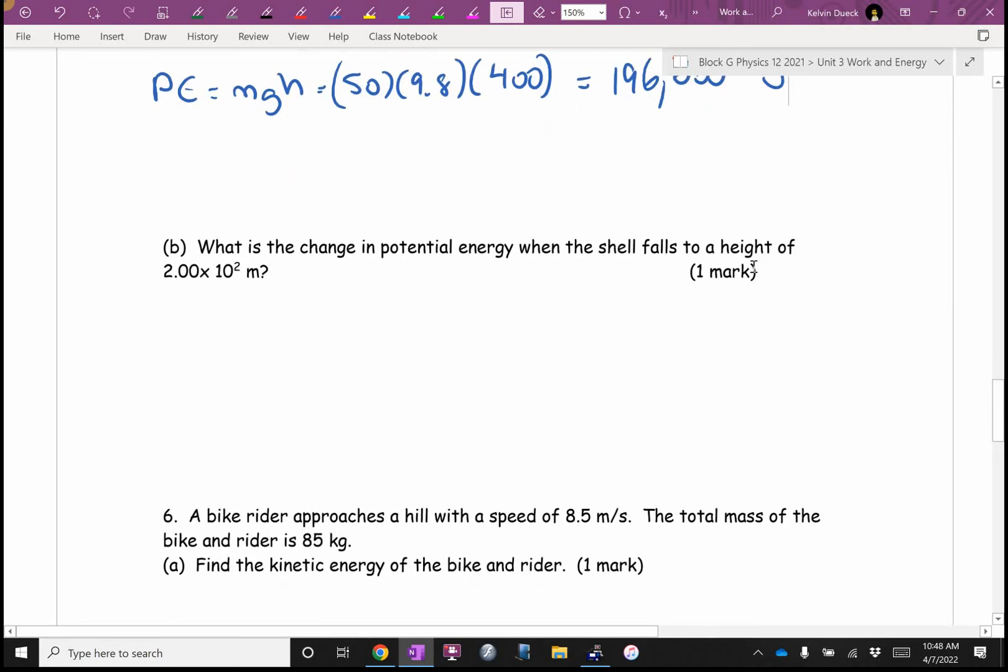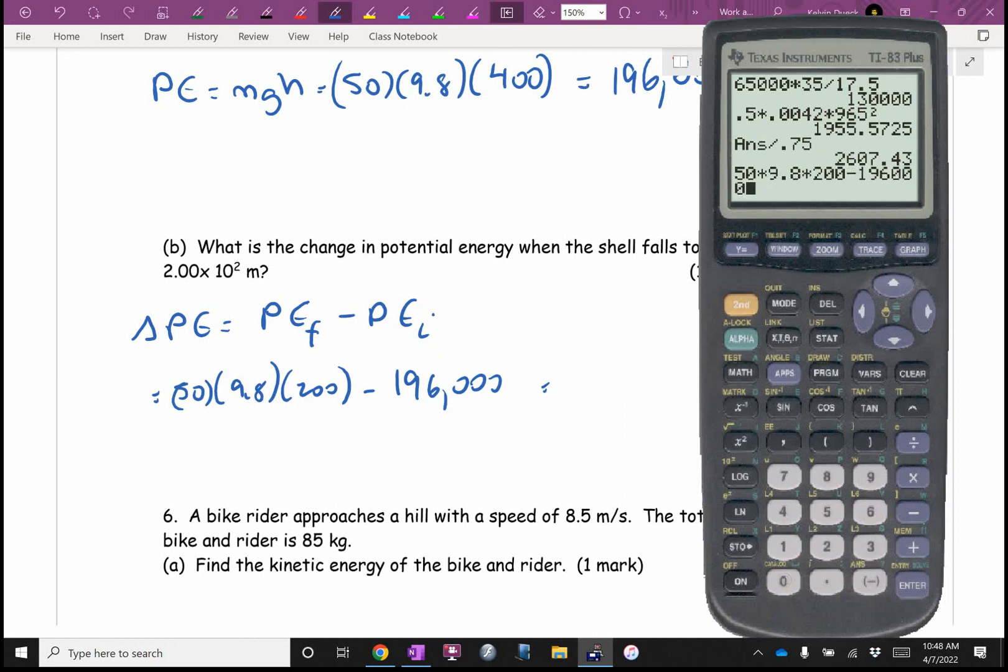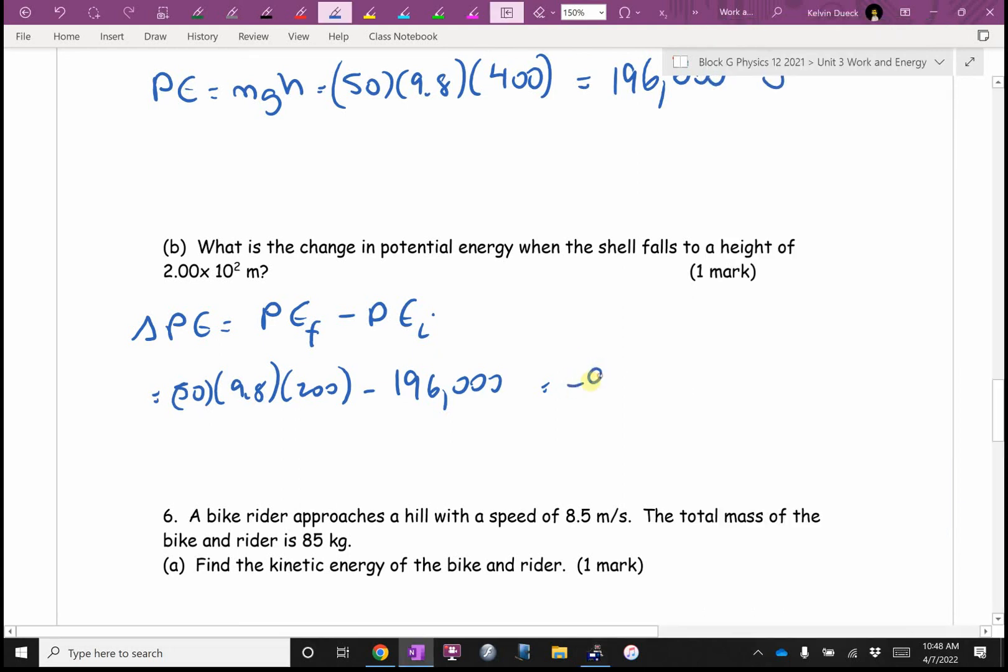What's the change in potential energy when it falls to a height of that? Well, change in anything is going to be final minus initial. So the initial was 196,000. The final is going to be 50 times 9.8 times 200. I am going to get a negative answer, I think. Negative 98,000. We lost 98,000 joules of potential energy. Does that mean we lost energy? No, it's conserved. It went into, if we ignore air resistance, kinetic energy. This object is speeding up.